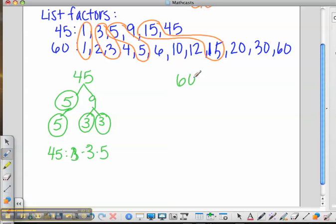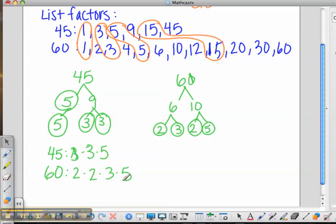Doing the prime factorization for 60. Let's break it down into 6 times 10. 6 can become 2 times 3, and 10 can be 2 times 5. So, the prime factorization for 60 is 2 times 2 times 3 times 5. I'm going to fix this 3 real quick so it looks a little bit more like a 3.